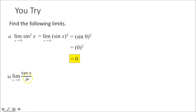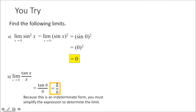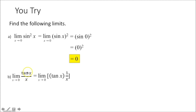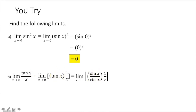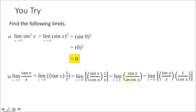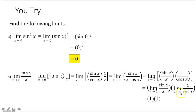Now the limit as x approaches 0 of tangent of x over x — try to plug it in first. You get 0 over 0, which is an indeterminate form. Rewrite it as tan x times 1 over x, then write tan x as sine of x over cosine of x. Multiply it out to get sine of x over x times cosine of x, then separate using the product property: the limit as x approaches 0 of sine of x over x is 1, and the limit as x approaches 0 of 1 over cosine of x gives 1 over 1. So 1 times 1 gives you 1.